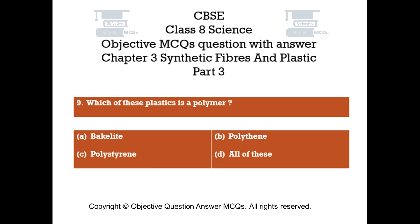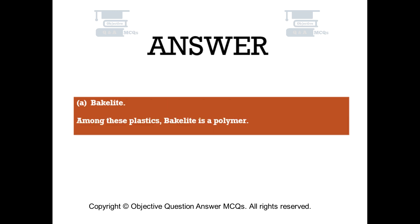Question number nine. Which of these plastics is a polymer? Option A: bakelite. Option B: polythene. Option C: polystyrene. Option D: all of these. The right answer is option A — bakelite. Among these plastics, bakelite is a polymer.